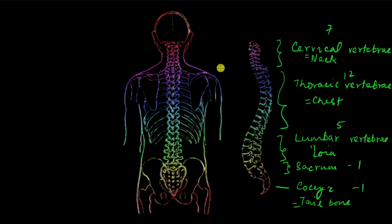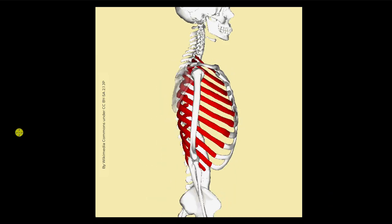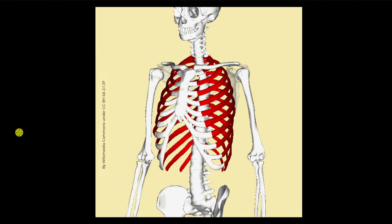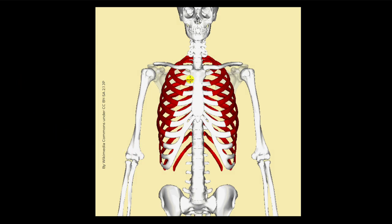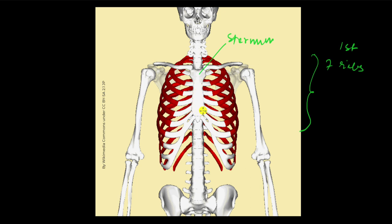The thoracic vertebrae are connected to the ribs. There are 12 ribs on each side, each connected to the thoracic vertebrae at the back. At the front, they are connected to the sternum. Depending on how they are connected to the sternum, the ribs have different names. The first seven ribs are directly connected to the sternum through cartilage — each separately — and are called true ribs.